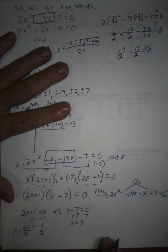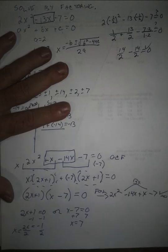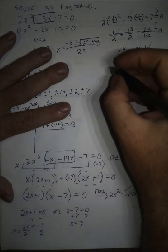So negative 1 half is a solution to this equation, and we'll do 7 real quick.